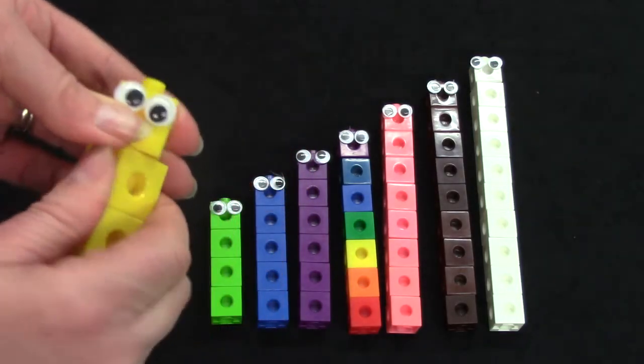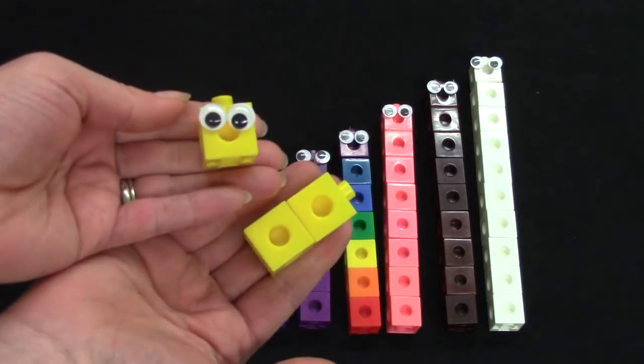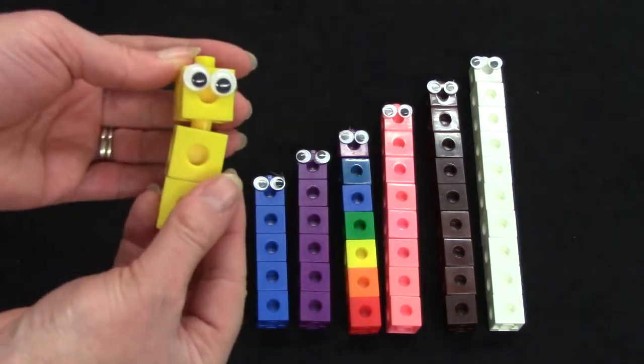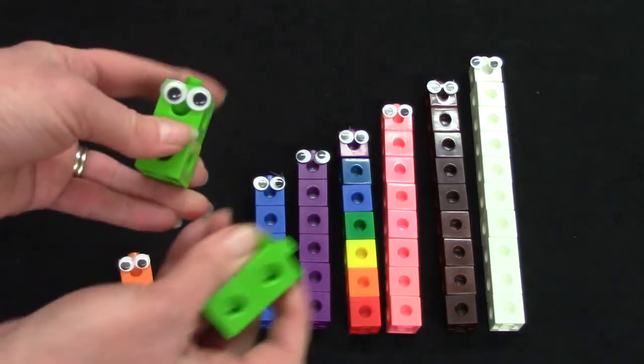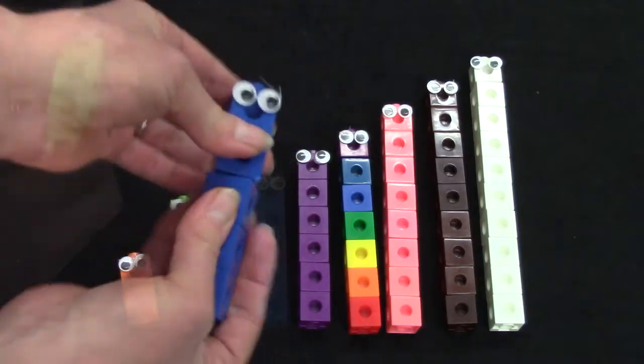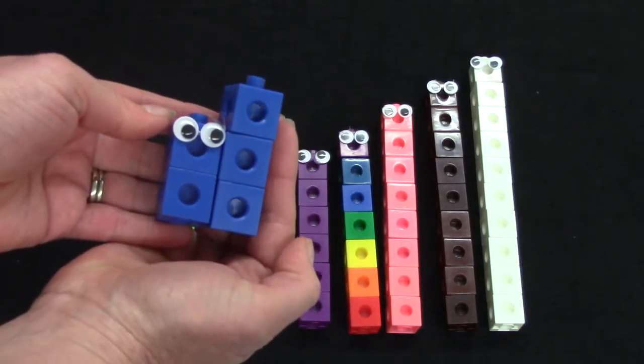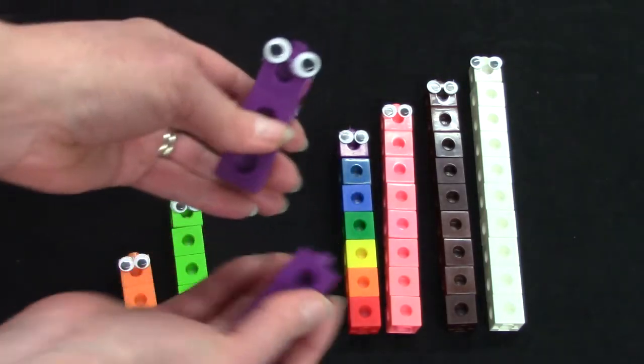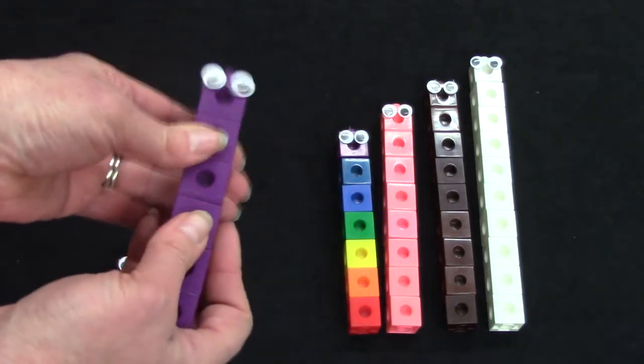3 is not an even number. I have 2 in this hand and 1 in this. I can't have an even number. So I'm going to take 3 out because it is not an even number. 4 is an even number. I can have 2 in each hand. 5 is not even because there's more in this hand than in this one. How about 6? Yes, that's an even number. So we'll keep 6.